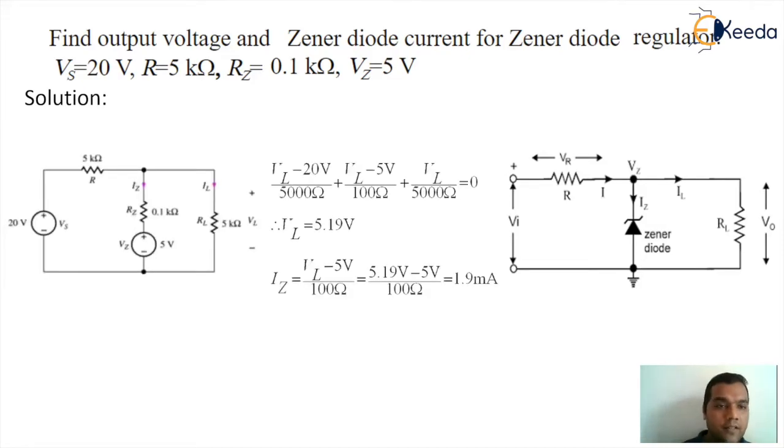We are supposed to find the value of output voltage and Zener diode current. So here the value of current can be found by applying KCL at the output node. You can see the center node - you can find the load equations by applying KCL at that node. You will get VL minus 20 by 5000 plus VL minus 5 by 100 plus VL by 5000 equals 0. So we get the node voltage VL as 5.19 volt. That is going to be the value of output voltage.